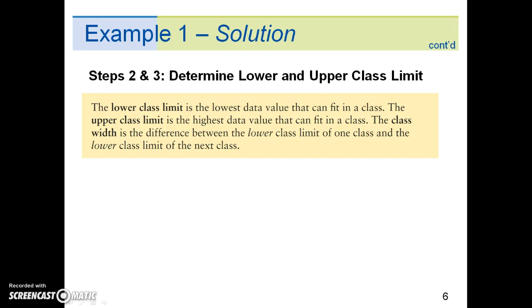Steps 2 and 3 are to determine the lower and upper class limits. The lower class limit is the lowest data value that can fit in a class. The class width is the difference between the lower class limit of one class and the lower class limit of the next class.